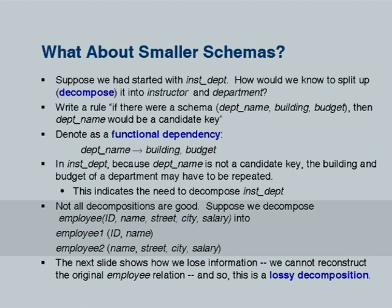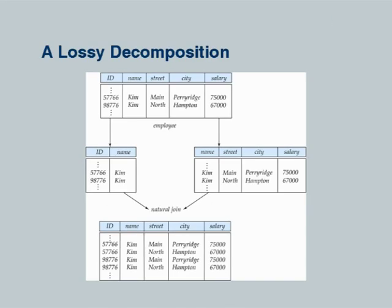Here is another example of a bad decomposition. Suppose we have an employee table with ID, name, street, city, salary, and we decompose it into employee1(ID, name) and employee2(name, street, city, salary). What goes wrong? If there are two employees with the same name, employee2 will not map uniquely to one entry in employee1. There will be two rows for two different employees with the same name but different addresses.